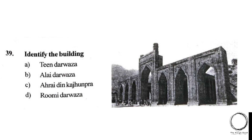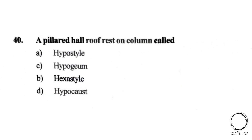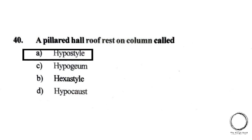Next: a pillared hall whose roof rests on columns is called: A) Hypostyle, B) Hypogeum, C) Hexastyle, D) Hypocaust. The right answer is A, Hypostyle. Here we come to the end of the video.